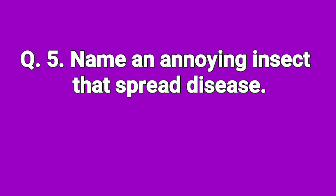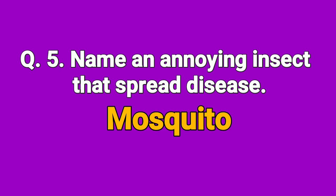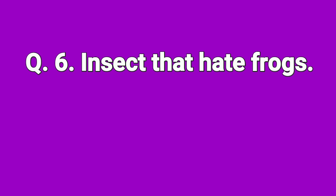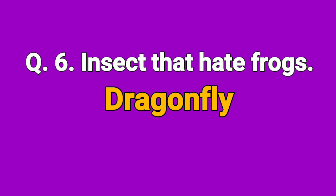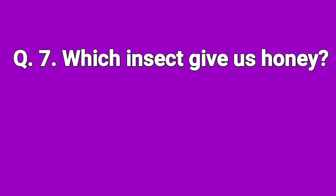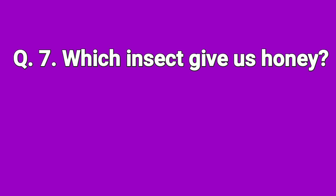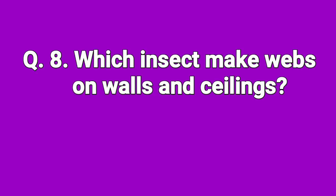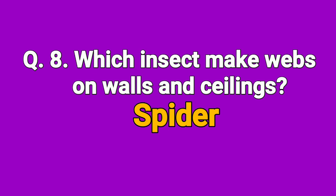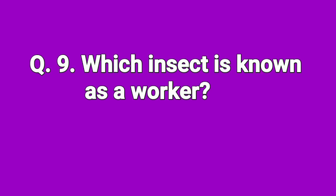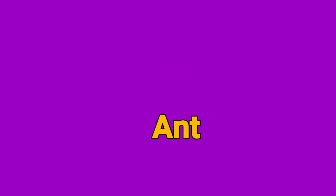Name an annoying insect that spreads disease. Mosquito. Which insect feeds frogs? Dragonfly. Which insect gives us honey? Honeybee. Which insect makes webs on walls and ceilings? Spider. Which insect is known as a worker? Ant.